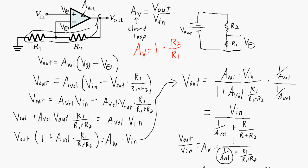This effect of having negative feedback — in this case negative feedback going back to the inverting terminal — means we end up being able to control the overall voltage gain of this circuit to be equal to 1 plus the ratio of resistor R2 to resistor R1.